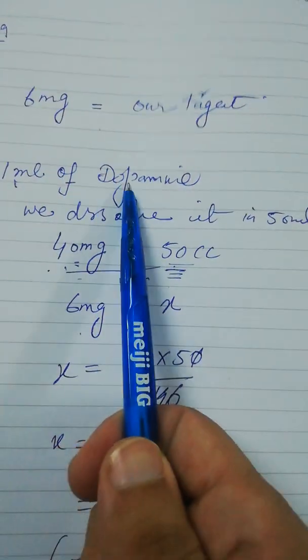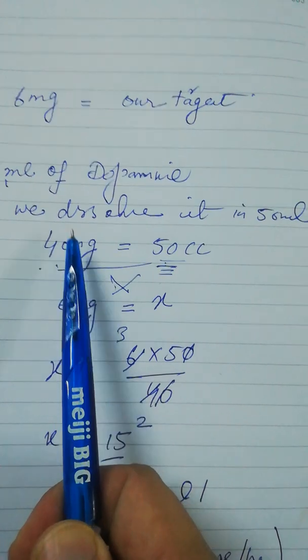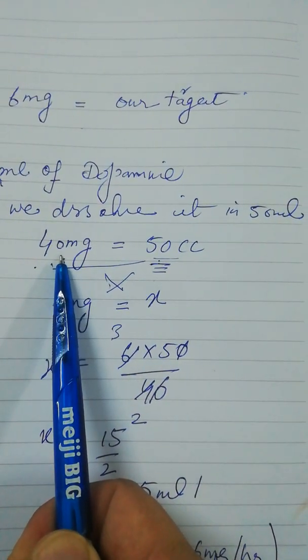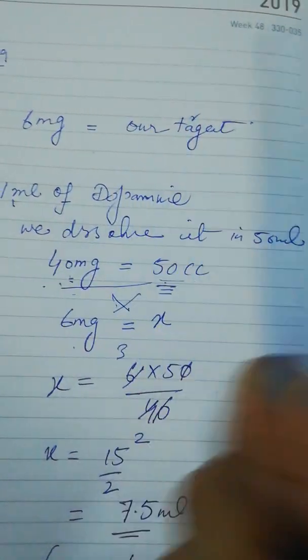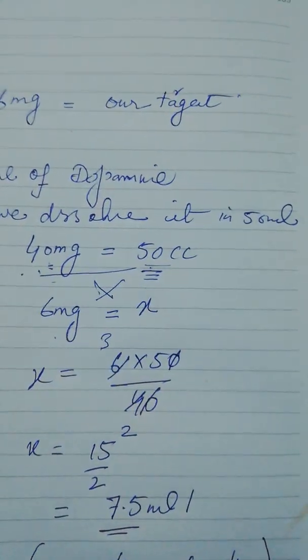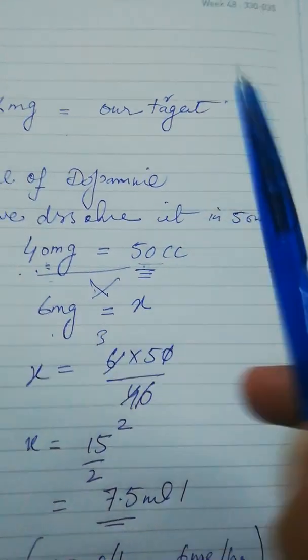As we know that 1 ml of dopamine contains 40 mg, if we dissolve 40 mg or 1 ml of dopamine in 49 ml of normal saline that will become a 50 ml solution.